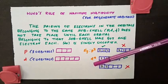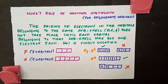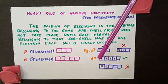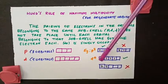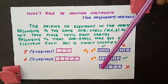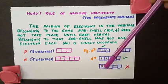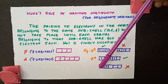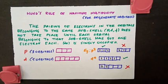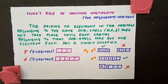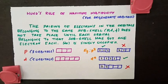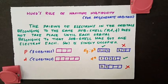We have now seen three rules: the Aufbau principle, Pauli's exclusion principle, and Hund's rule of maximum multiplicity. We must follow all these rules while writing the electronic configuration of an atom, which we will see in the next video. Now we will look at an example to find the quantum numbers for an electron in an atom.